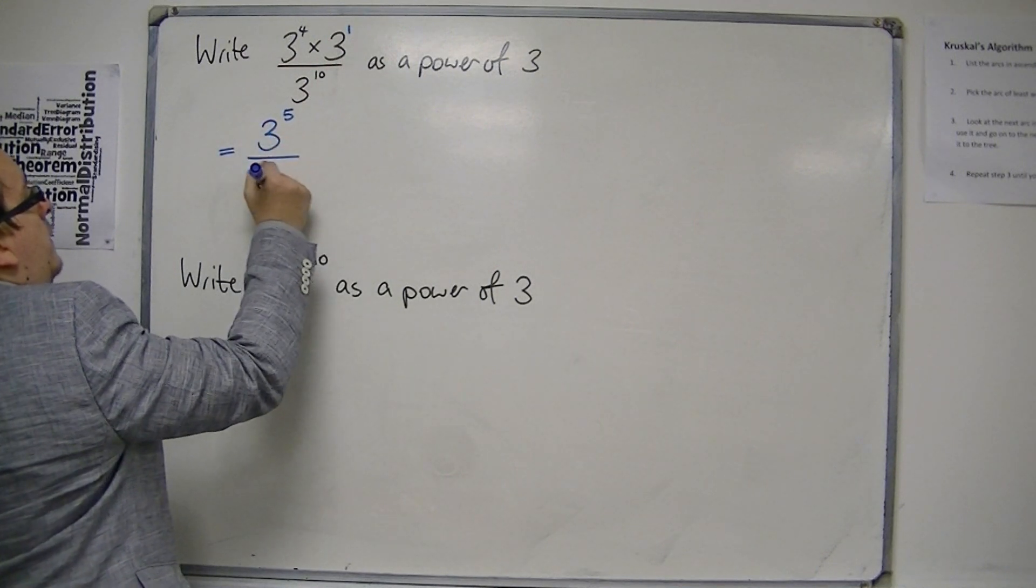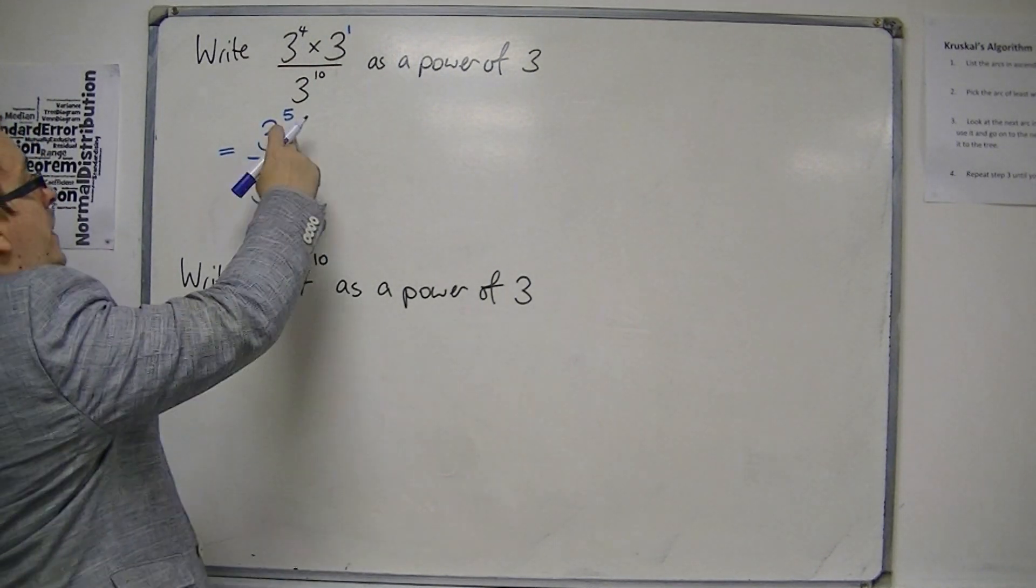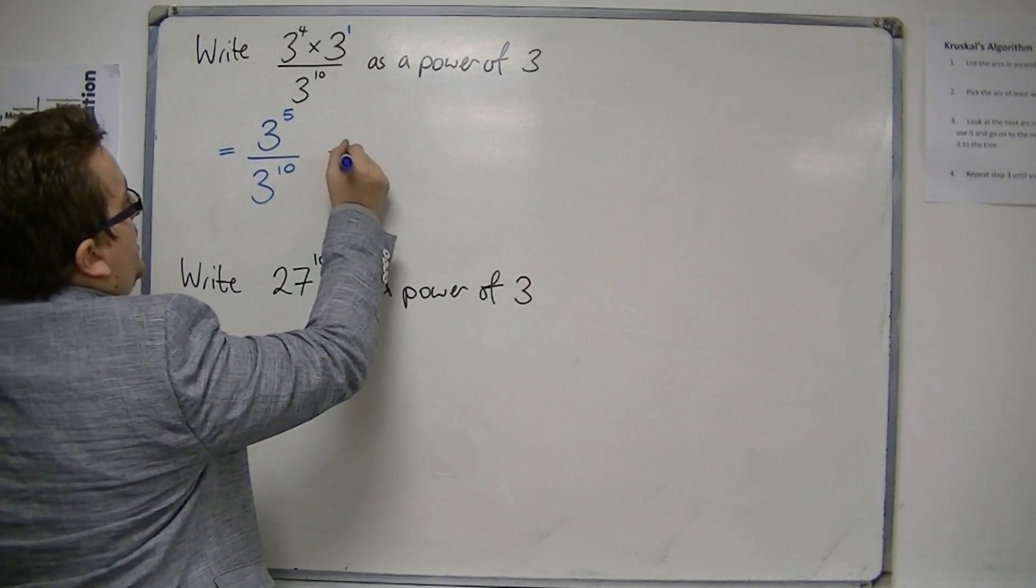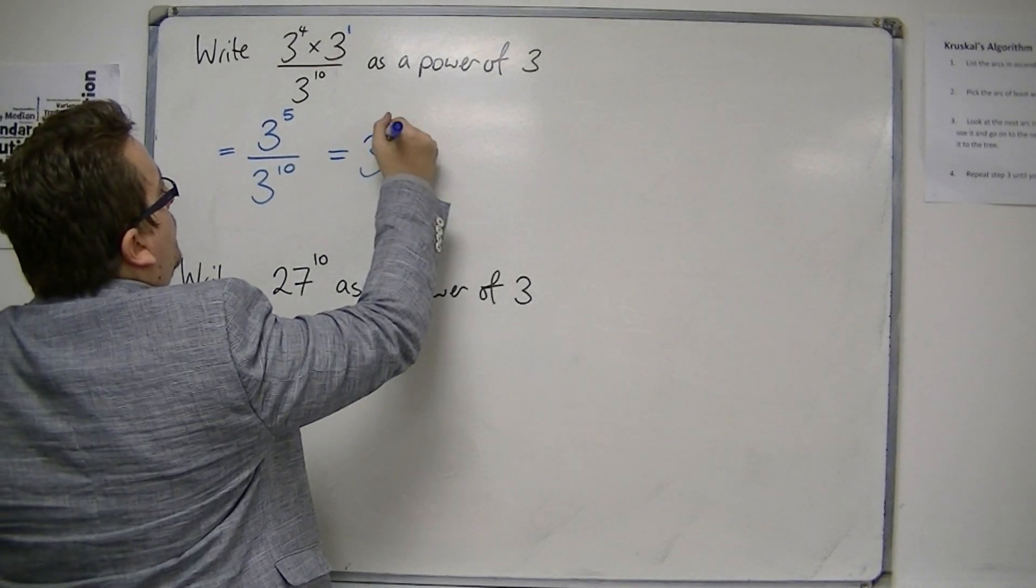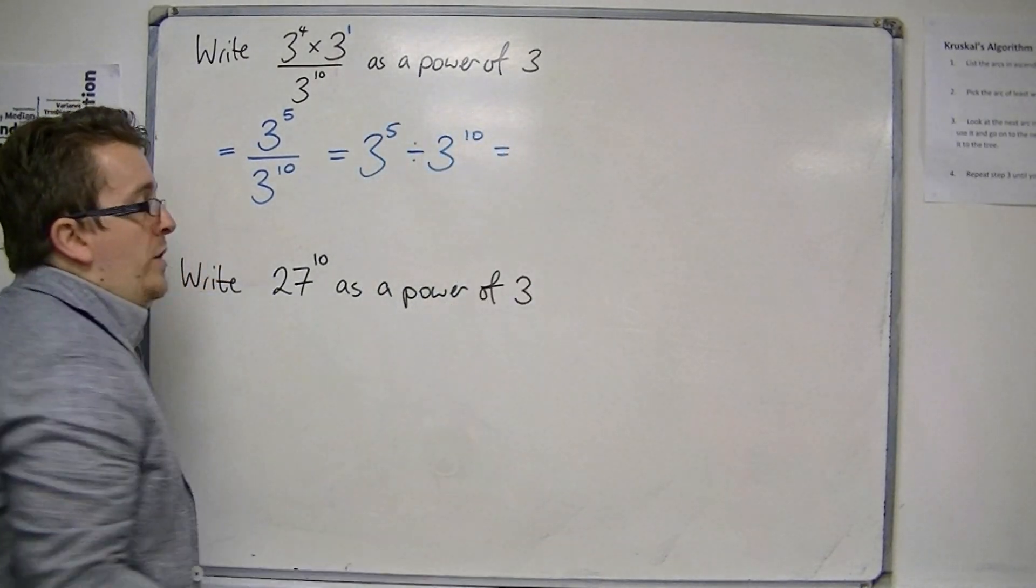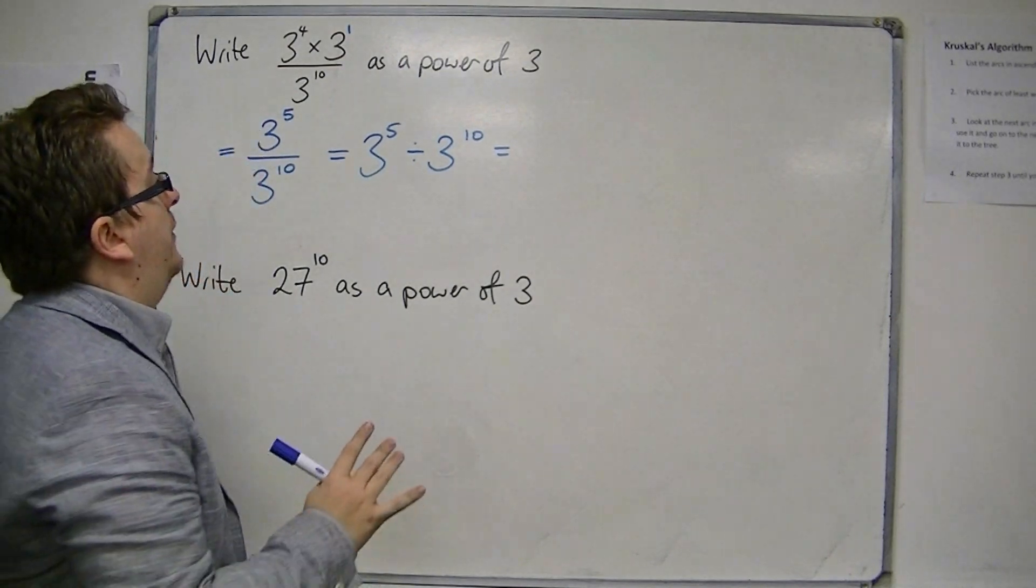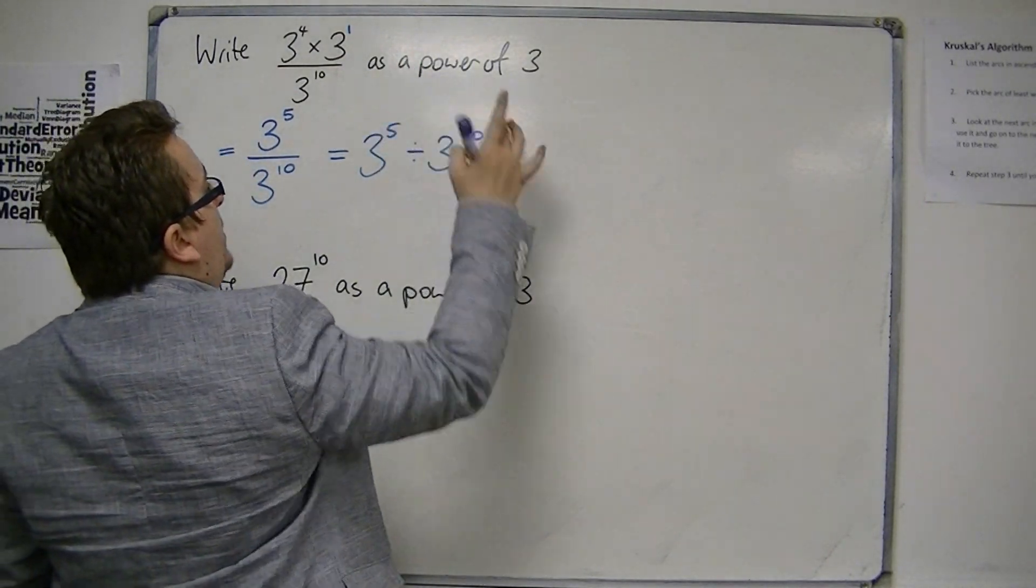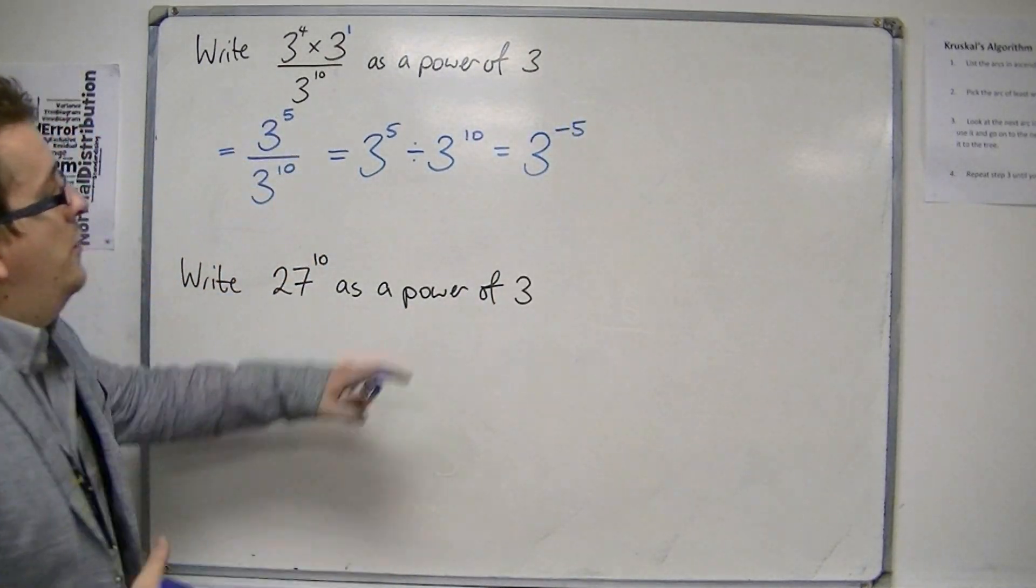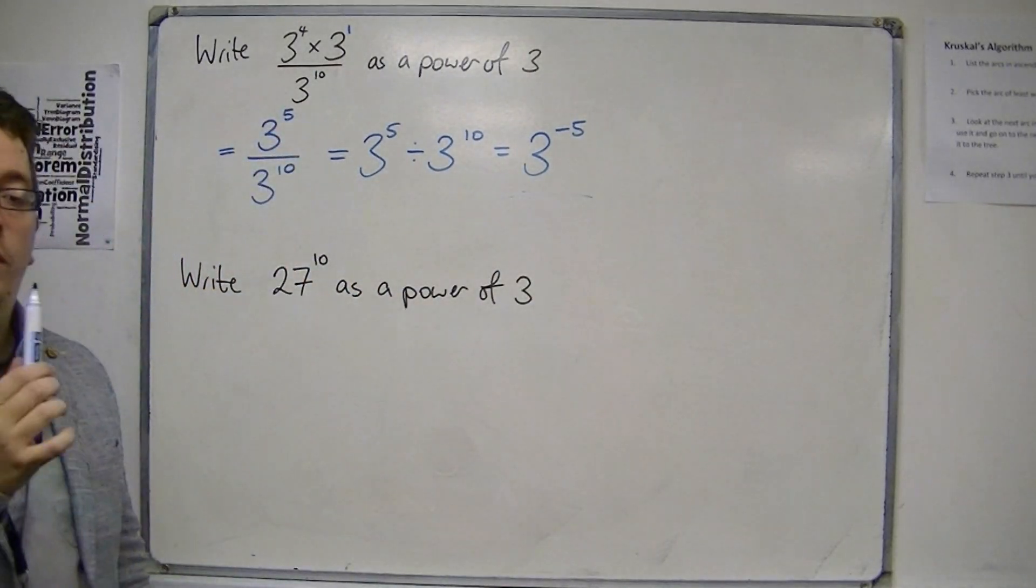4 plus 1 over 3 to the power of 10. OK, so the numerator is 3 to the 5. Now this is 3 to the 5 divided by 3 to the 10. And we know that if we divide, then we subtract the indices. So we've got 5 take away 10 is minus 5. And so this is now what we want. This is now a power of 3.